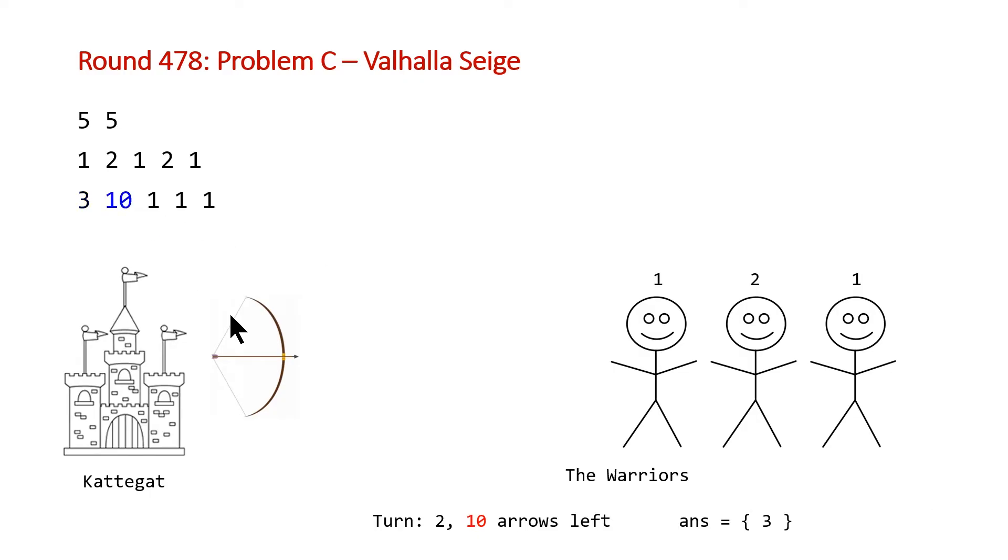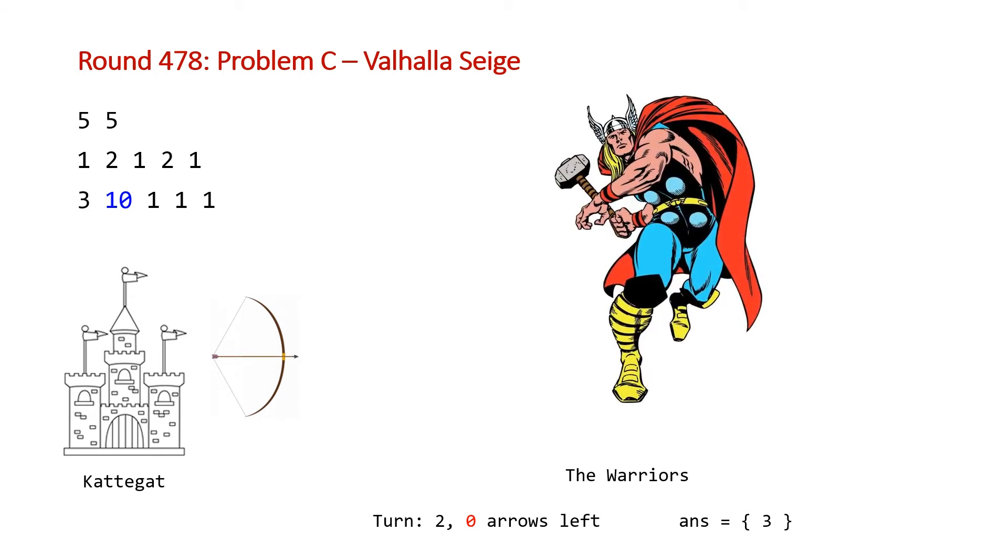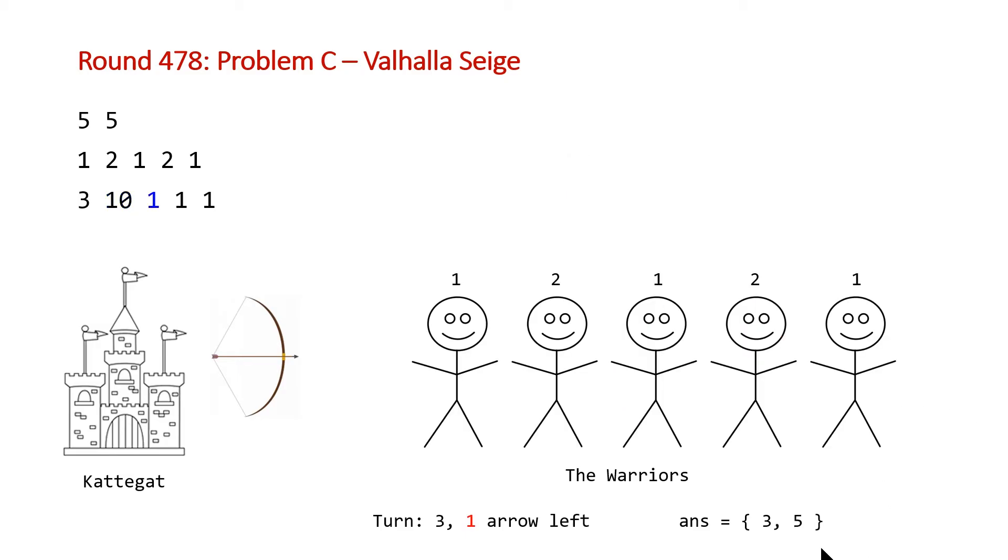Then we move to our next turn, we've got 10 arrows here. And so we're just going to do the same thing. 10 arrows will be enough to kill off the remaining three warriors. And then for the remainder of the turn, the arrows will just fly by. And at this point, Thor shows up, he smashes his hammer, and then all the warriors are standing again. So at the end of this turn, we'll be back to five warriors.